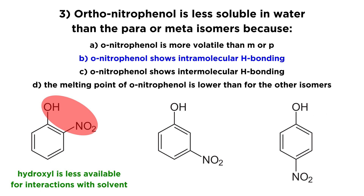The answer here is B: ortho-nitrophenol shows intramolecular hydrogen bonding — intra meaning within the same molecule rather than with other molecules. We see this for the ortho isomer, whereas for the meta and para isomers those groups are too far apart for that interaction to occur. So the answer is B.